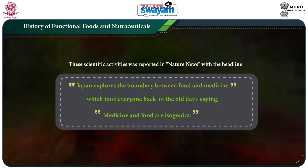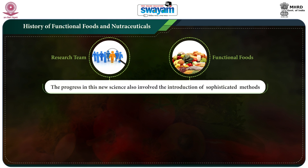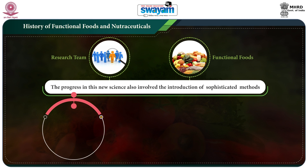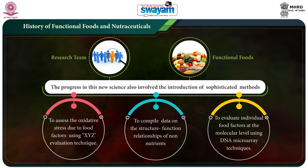These scientific activities were reported in Nature News with the headline 'Japan explores the boundary between food and medicine,' which took everyone back to the old saying that medicine and food are isogonics. The research team investigated hundreds of fruits and vegetables scientifically for functional food components. The advancement in this latest science also involved the introduction of sophisticated methods, namely assessment of oxidative stress due to food factors using XYZ evaluation technique, compilation of data on the structure-function relationship of non-nutrients, and evaluation of individual food factors at the molecular level using DNA microarray techniques.